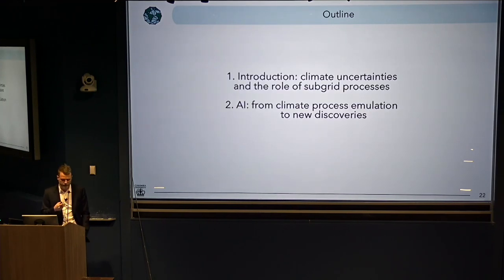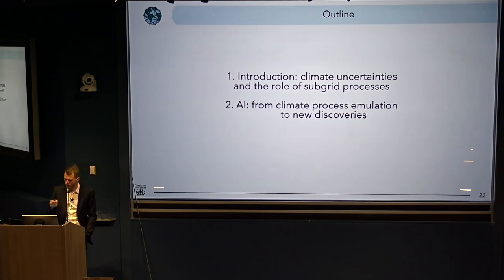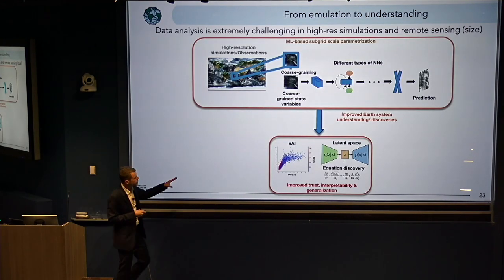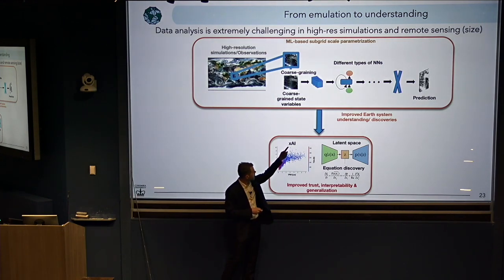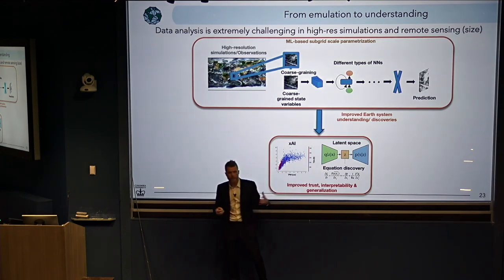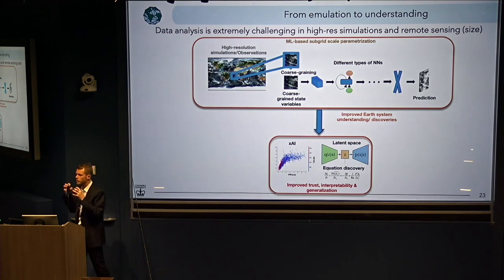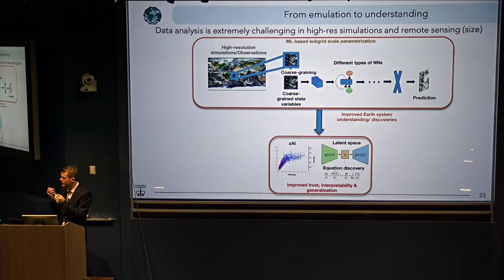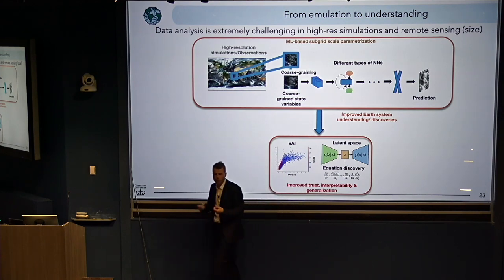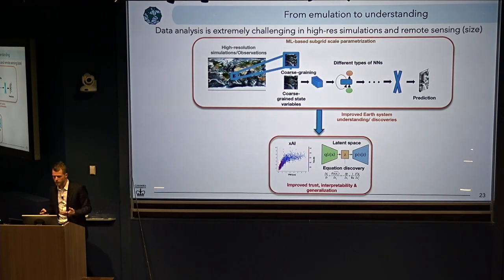But more fundamentally — and that's really the focus for the rest of the talk — can we actually use machine learning not just for emulation but to actually make new discoveries? As physicists, that's my primary interest. How can we use AI to go beyond emulation to real new discoveries? We'll try to use different strategies: explainable AI — trying to look at some of the data and explain it better — some sort of latent space or embedding to compress the information into something understandable, and maybe some equation discovery. Those are three key ingredients we can use to actually build interpretability and understanding in terms of the physics we've learned.